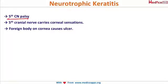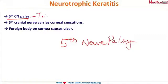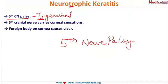Another similar but distinct condition is neurotrophic keratitis, caused by fifth cranial nerve (trigeminal) palsy. A helpful mnemonic: 'T' is present in both trigeminal and neurotrophic — so neurotrophic is due to the trigeminal nerve. The fifth nerve carries sensation to the cornea, so when this is lost, the patient cannot feel a foreign body on the cornea, which remains there for a long duration and ultimately causes a corneal ulcer.